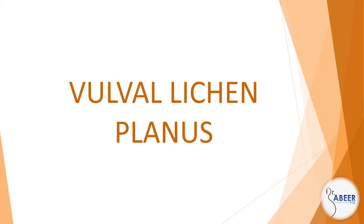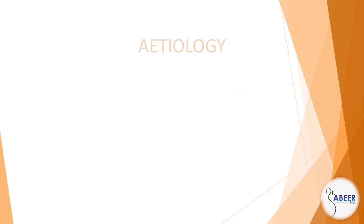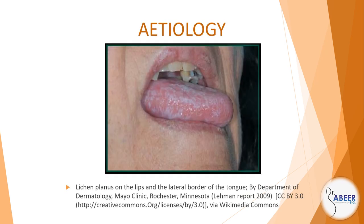Vulval lichen planus. Etiology: Lichen planus is an inflammatory disorder with manifestations on the skin, genital, and oral mucous membranes.